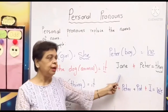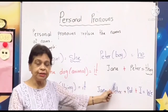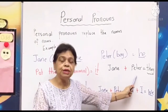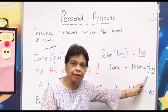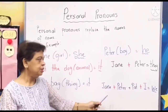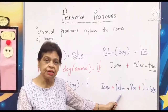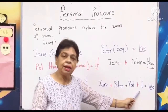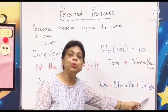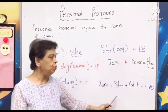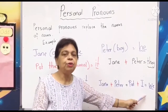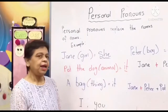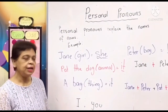Jane and Peter — the personal pronoun for two people is 'they.' When it includes 'I,' such as Jane, Pat the dog, and I, the personal pronoun becomes 'we.' When it ends with 'I,' you always use 'we.' And the other two pronouns are 'I' and 'you.'